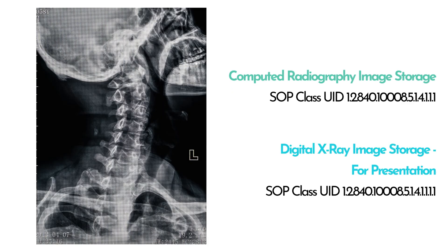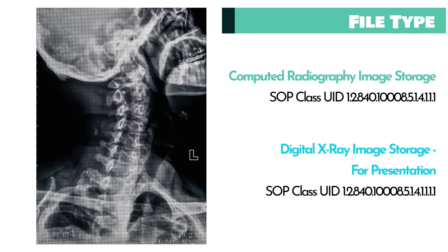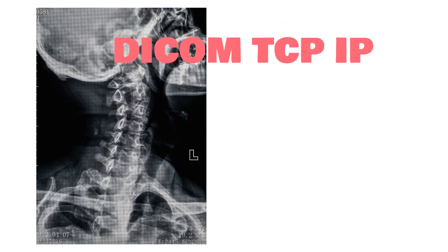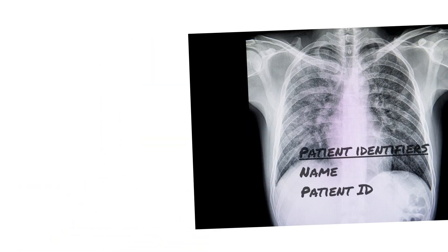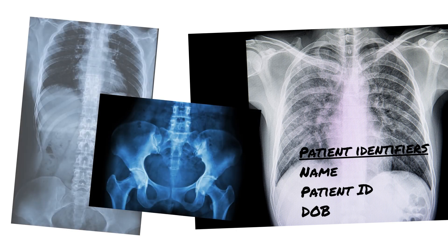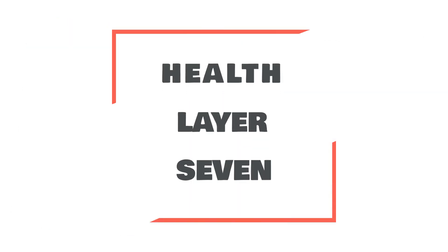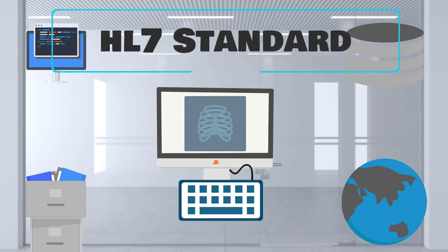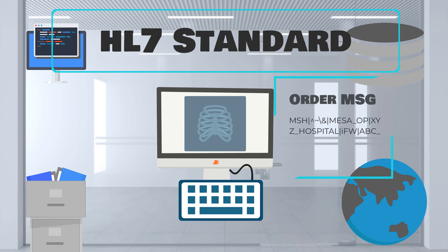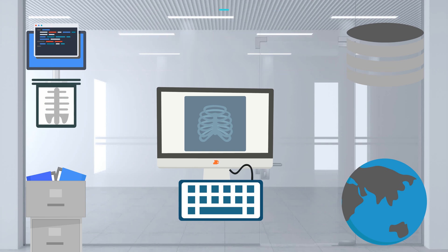Think of DICOM as the file type for medical images. These file types communicate in a very specific way, which requires the applications that handle these files to be compatible to certain standards. DICOM is sort of limited to imaging, whereas HL7 is the protocol for messages — a common language that various healthcare applications use to communicate with each other. This can be used to send textual information to and from different systems.